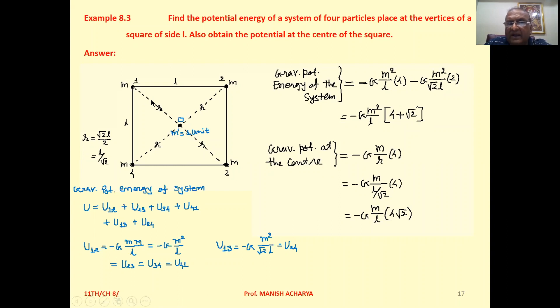Due to particle at 1, the potential here we can write as minus G m into 1 upon this distance r. But this distance r is root 2 L by 2, so we can write that as L by root 2. So potential due to this first particle is minus G m upon r at the center.